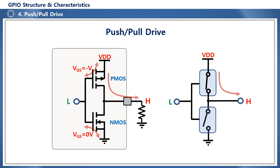Looking at the operating structure, first, when the input is low, the gate source voltage VGS of the upper P-type MOSFET becomes negative, and at the same time, the gate source voltage VGS of the lower N-type MOSFET becomes zero, so the upper P-type MOSFET turns on and the lower N-type MOSFET turns off, and a high is output to the GPIO port.